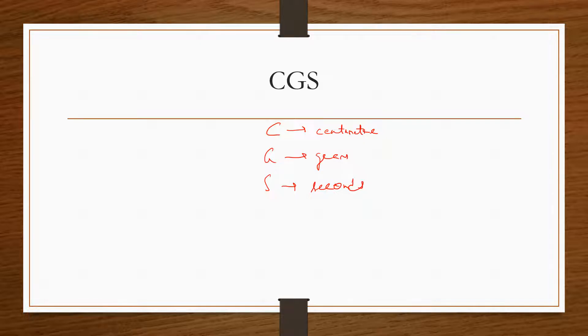In this system, the unit of length is centimeter, the unit of mass is gram, and the unit of time is second. For example, if we will say centimeter per second, this is in the CGS system.